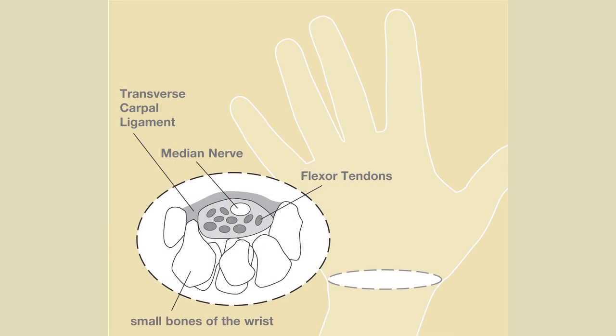Not all pain in the hand is necessarily carpal tunnel syndrome. There are many causes of pain in the hand — there can be arthritis, tendonitis, cramps, fractures. But carpal tunnel syndrome is most specifically a compression of a nerve in the hand, and specifically it's the median nerve.